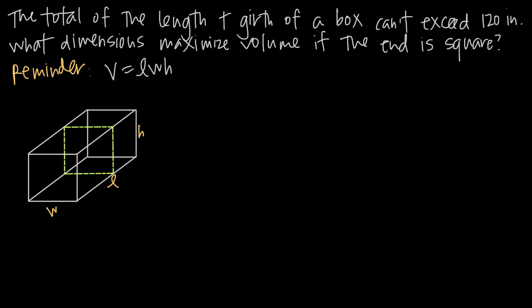In this video, we're talking about applied optimization. In this particular problem, we've been told that the total of the length plus the girth of a box can't exceed 120 inches. We've been asked what dimensions maximize the volume of the box if the end of the box is a square. There's a lot going on in this question, as there usually is in applied optimization questions.